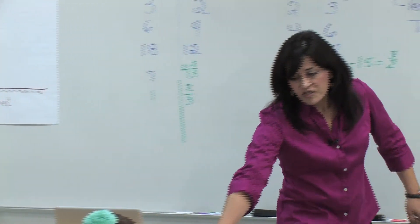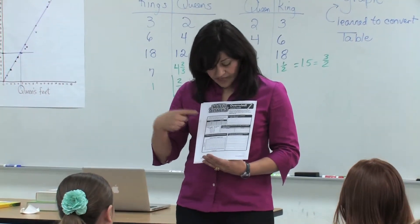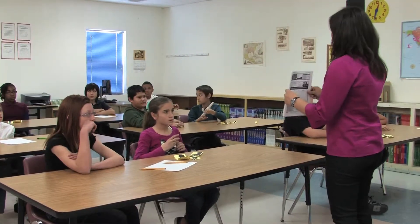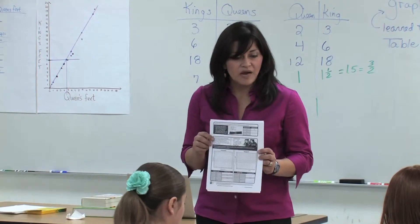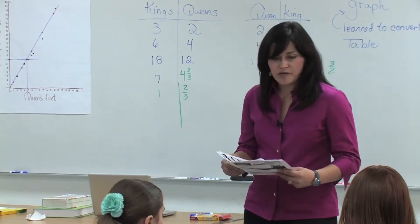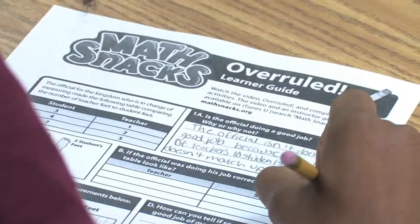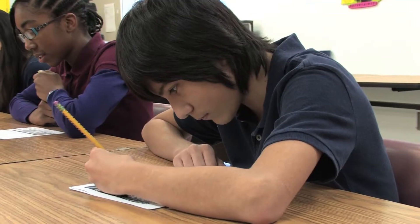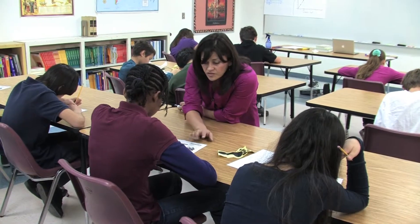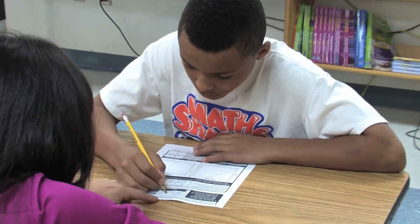I'm going to pass out the learner's guide. If you look at it, what does it look like it has? Feet — lots of feet. Are they all going to be the same as the ones we did here? No. If you have any questions, ask your neighbor first. If both of you can't figure it out, then call me over. We're going to do this for about 15 minutes. Learner guides extend the lesson by asking students to apply the same mathematical concepts under slightly different circumstances. In this case, the learner guide showed me where students were struggling and we seized it as a teachable moment.